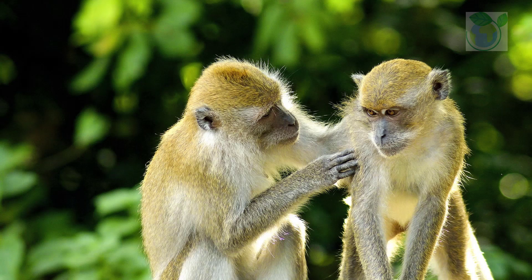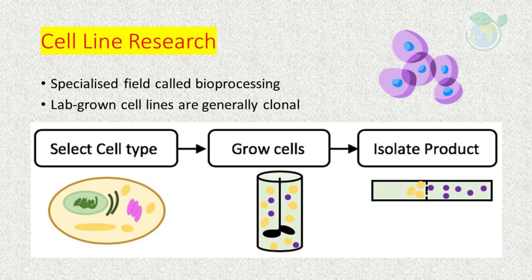Derived from the kidney of an African green monkey, Cercopithecus aethiops, in the 1960s, Vero cells are one of the most common mammalian continuous cell lines used in research. This anchorage-dependent cell line has been used extensively in virology studies, but has also been used in many other applications, including the propagation and study of intracellular bacteria — for example Rickettsia — and parasites — for example Neospora — and assessment of the effects of chemicals, toxins, and other substances on mammalian cells at the molecular level.